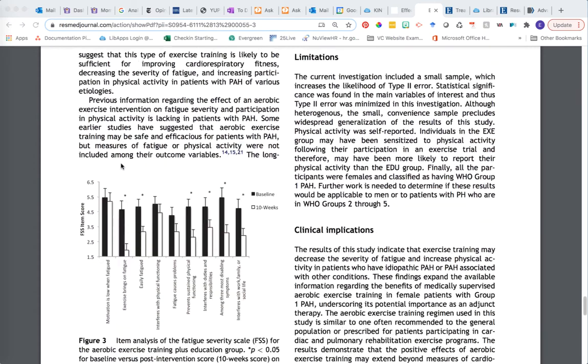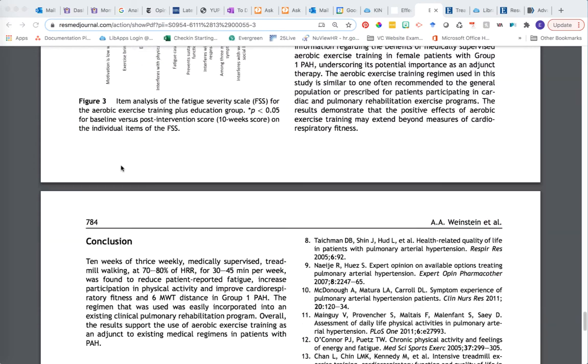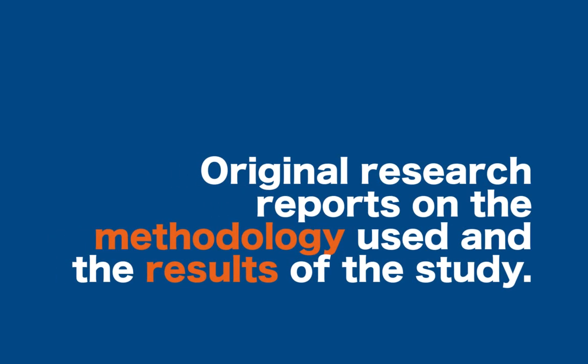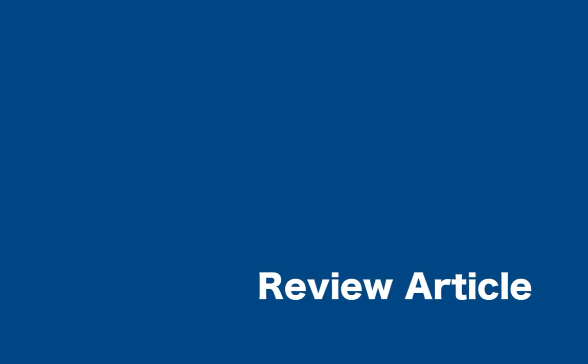Not all primary research articles will have this exact combination of parts, but it should always report on methodology used for the study and provide a result section reporting on the data gathered. Now let's look at a review article.